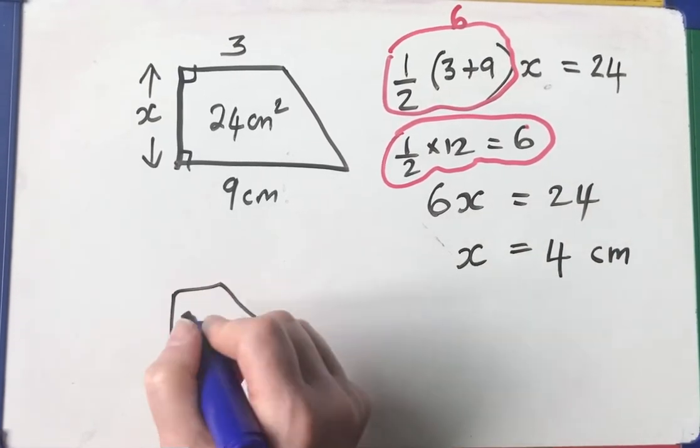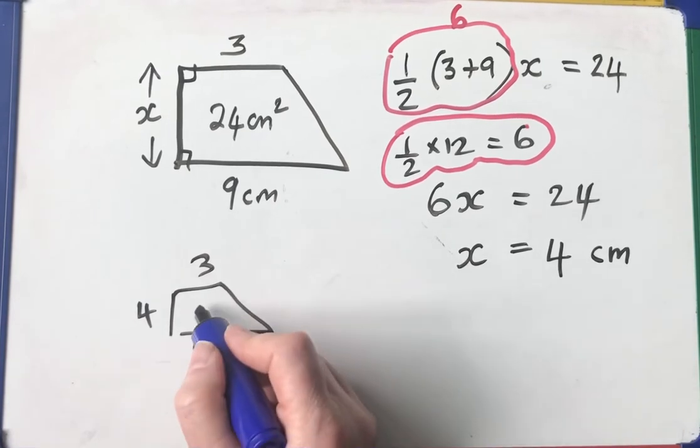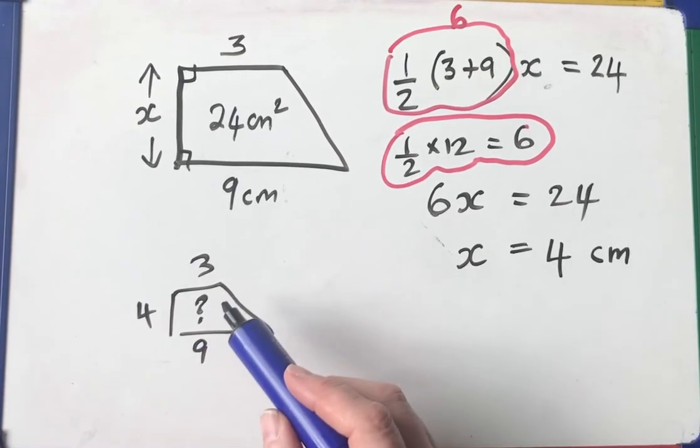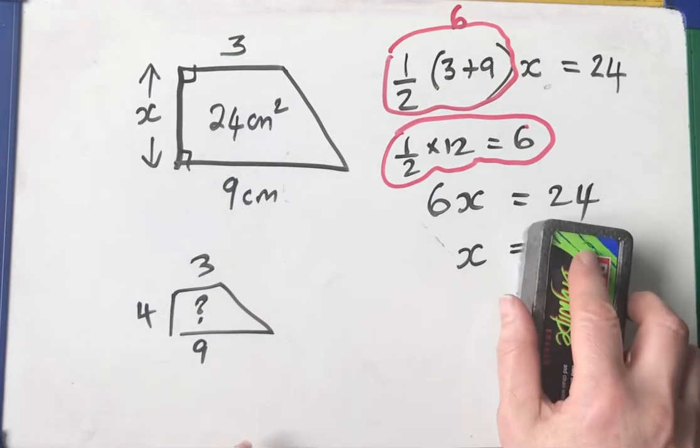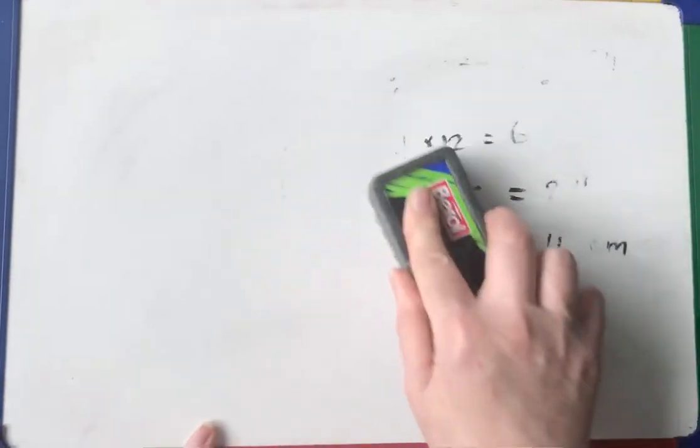I'm just going to do a quick check. That was 4. I said that was 4. That's 3. That's 9. I want to know what the area is. 9 plus 3 is 12. Half of 12 is 6. 6 times 4 is 24. Half the sum of the parallel sides times the space between them. That is how we calculate the area of a trapezium.